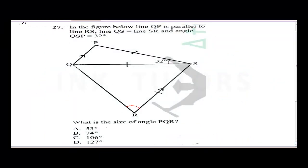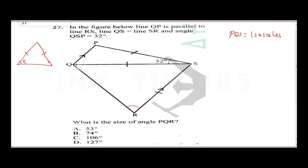Question 27: Line QP is parallel to line RT, line QS equals line SR, and angle QSP is 32 degrees. We need to find angle PQR. Since QS equals SR, triangle PQS is isosceles, meaning the two base angles are equal. Calling each base angle x, we get x plus x plus 32 equals 180 degrees.